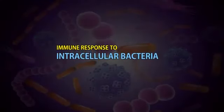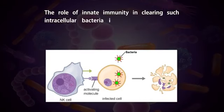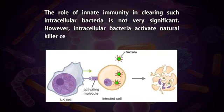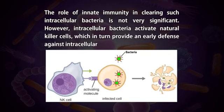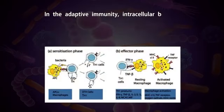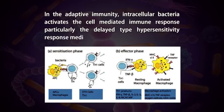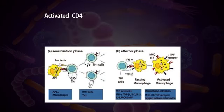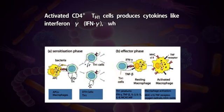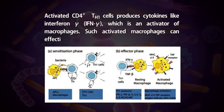Immune response to intracellular bacteria. When a bacterium infects a host cell, it establishes itself within the host cell. Such intracellular bacteria cannot be easily eliminated. The role of the innate immunity in clearing such intracellular bacteria is not very significant. However, intracellular bacteria activate natural killer cells, which in turn provide an early defense against intracellular bacterial infections. In the adaptive immunity, intracellular bacteria activate the cell-mediated immune response, particularly the delayed-type hypersensitivity response mediated by T helper 1 cells. Activated CD4-positive T helper 1 cells produce cytokines like interferon-gamma, which is an activator of macrophages. Such activated macrophages can effectively kill the intracellular bacteria.